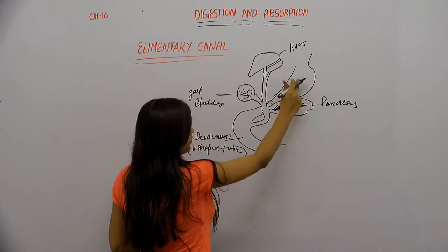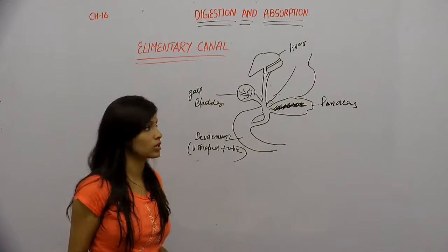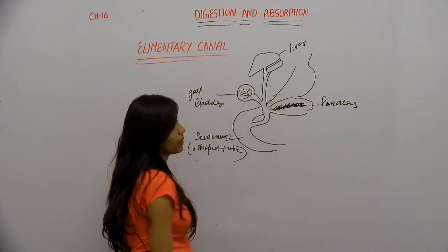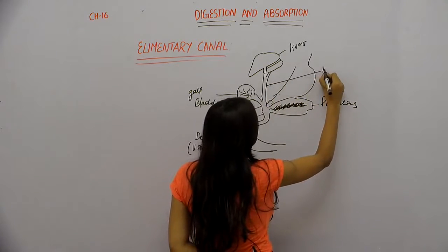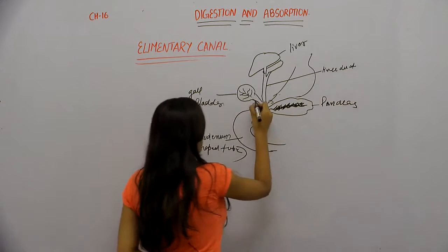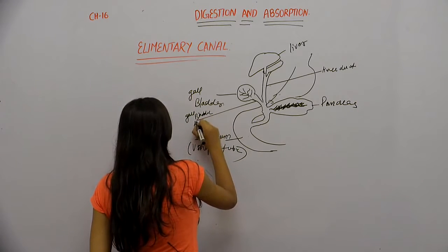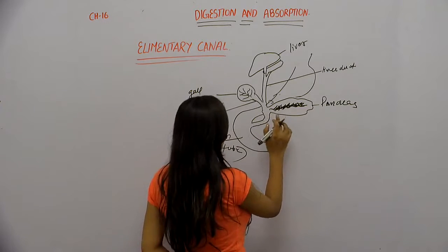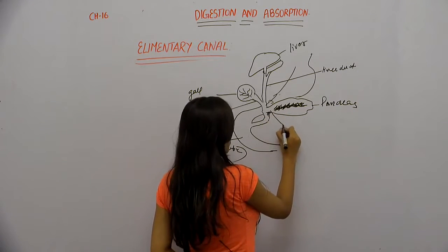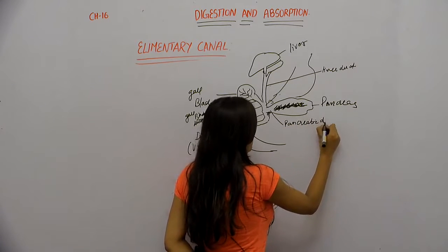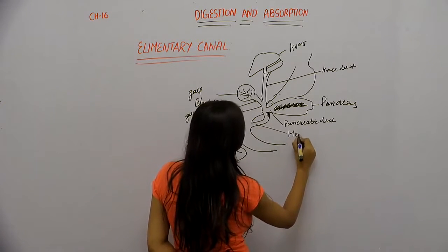The food passes from the stomach into this duodenum, and as it passes through the duodenum, the food receives all the juices which are secreted by the liver, gallbladder, and the pancreas. This is the liver duct, and this one is the pancreatic duct.